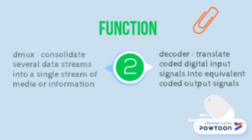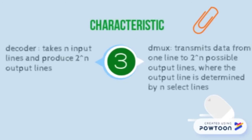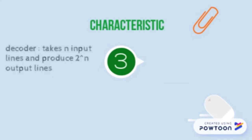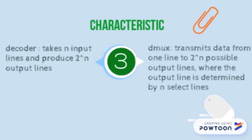A demultiplexer, on the other hand, does exactly the opposite of what a multiplexer does, which is to consolidate several data streams into a single stream of media or information. Third, characteristic of decoder and demultiplexer: a decoder takes N input lines and produces 2 to the power N output lines. A demultiplexer transmits data from one line to 2 to the power N possible output lines, where the output line is determined by N select lines.